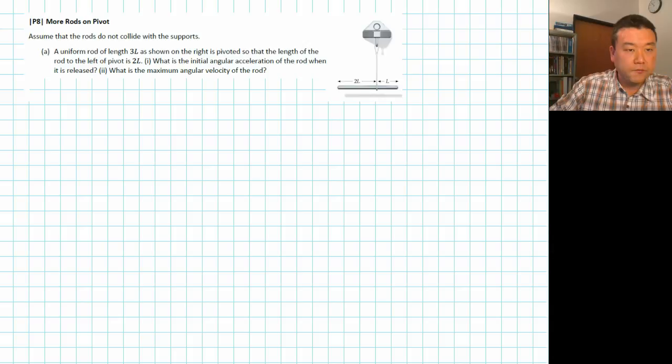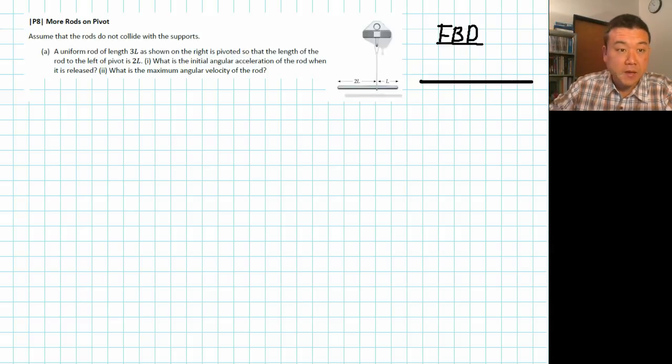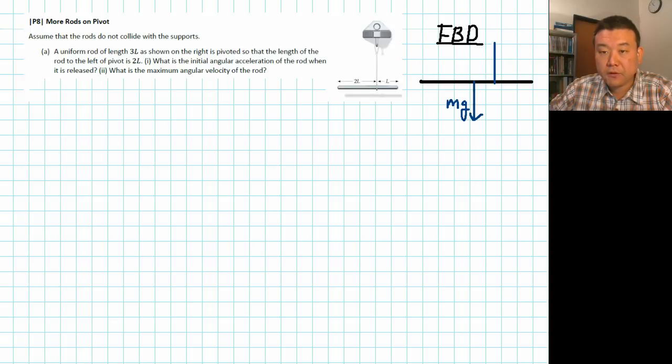So here's the free body diagram. I have a stick that represents the rod. And I'm going to draw the forces at their location. So there's going to be gravitational force acting at the center of mass of the rod. And there will be tension force acting at the pivot point, 2L from the left edge, L from the right edge. And that's it. That's all the forces on this rod.